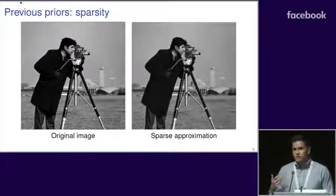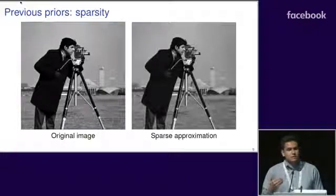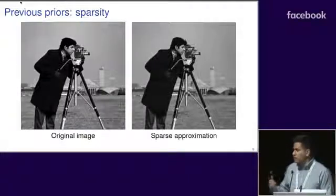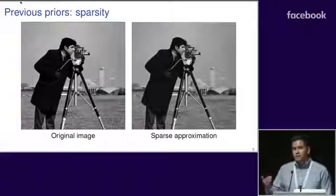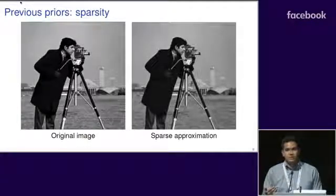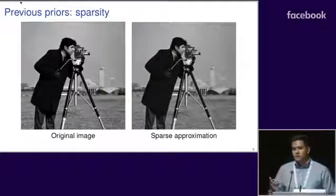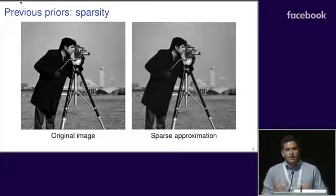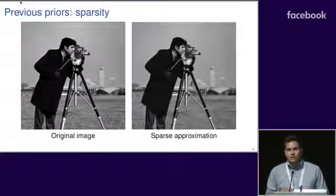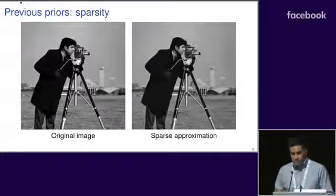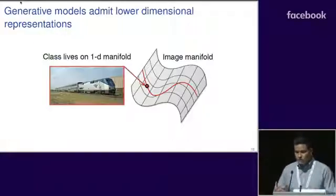This notion of sparsity led to a lot of advancements in image recovery problems, in particular for compressed sensing. Sparse compressed sensing led to a speedup of MRI imaging by a factor of 10 when it was first conceived, and offers its own theoretical guarantees. But one issue with sparsity is that it may be too broad of a prior to actually exploit the low dimensionality of our data.